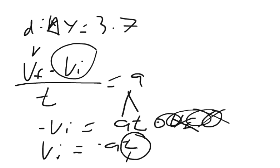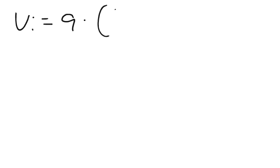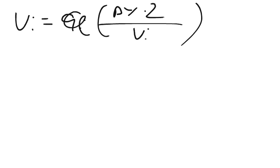So again, we take that and we plug it in here. So I got vi equals a times, instead of t, I put change in y times 2 divided by initial velocity. So we can distribute the a, so vi equals, and actually this is negative a, the vi equals negative a change of y times 2 divided by vi.